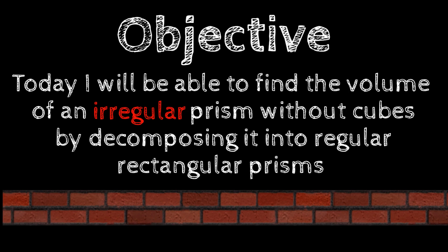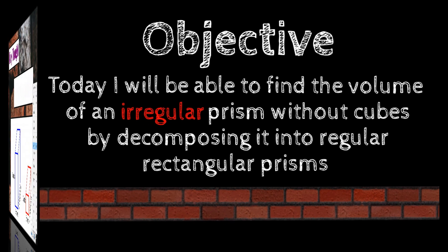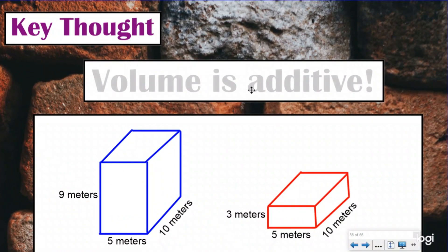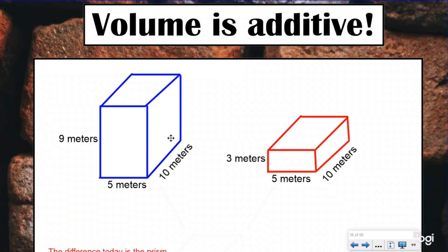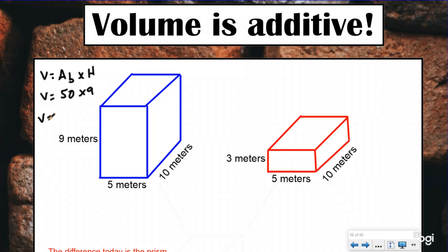They're just going to be rectangular prisms with the dimensions labeled. Our key thought again is that volume is additive. If I have two prisms and I find the volume of each of them — volume equals area of the base times the height. I did 5 times 10, which is 50, and my height is 9, so my volume for this one is 450 cubic meters.